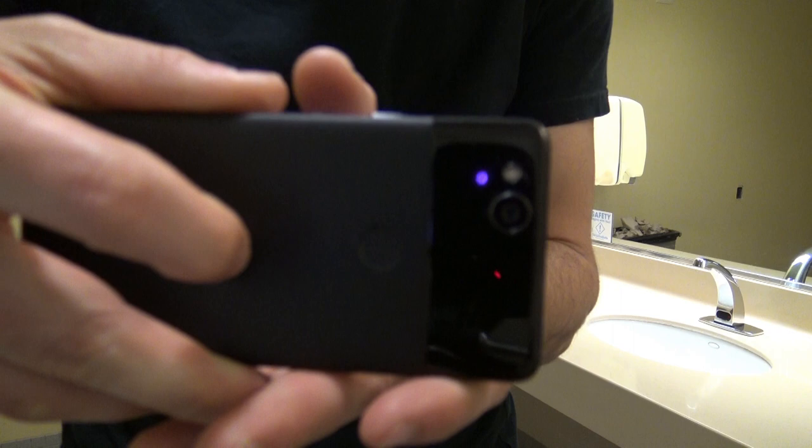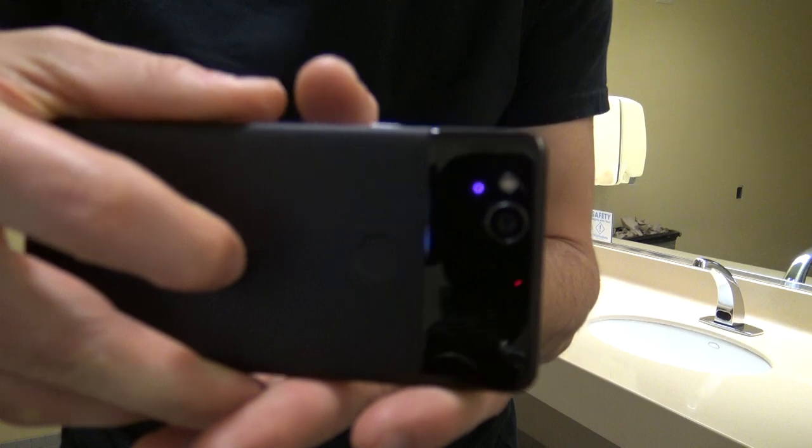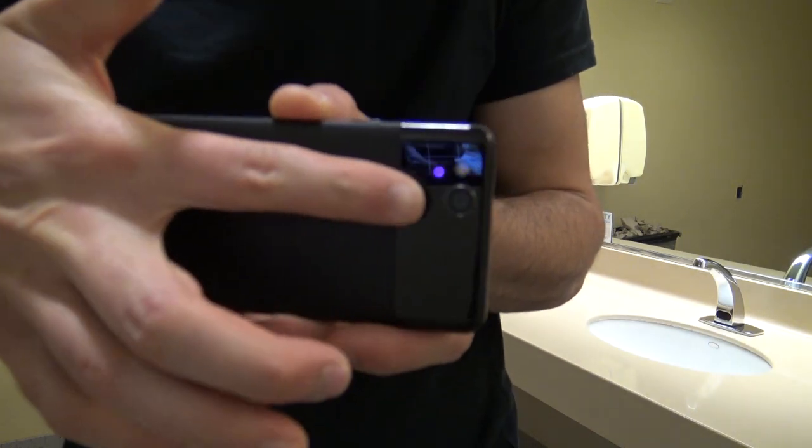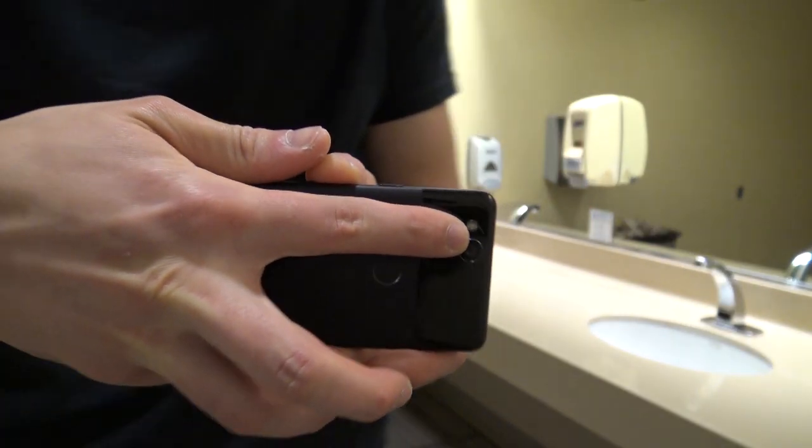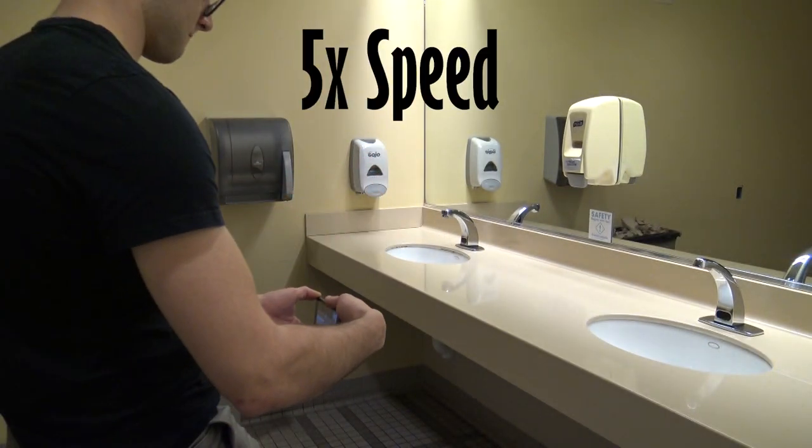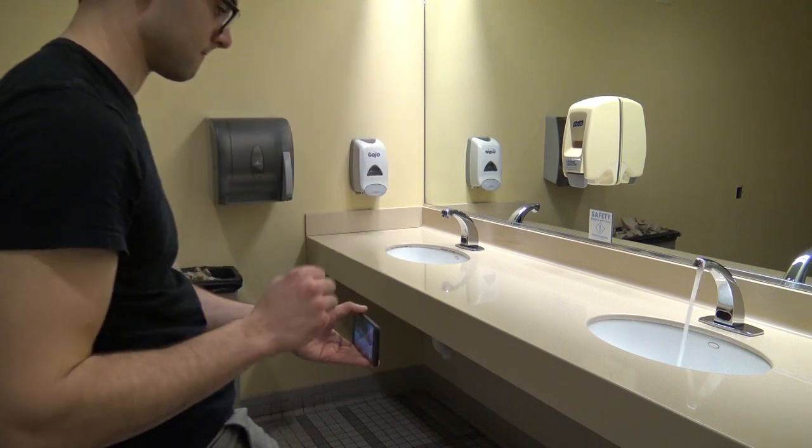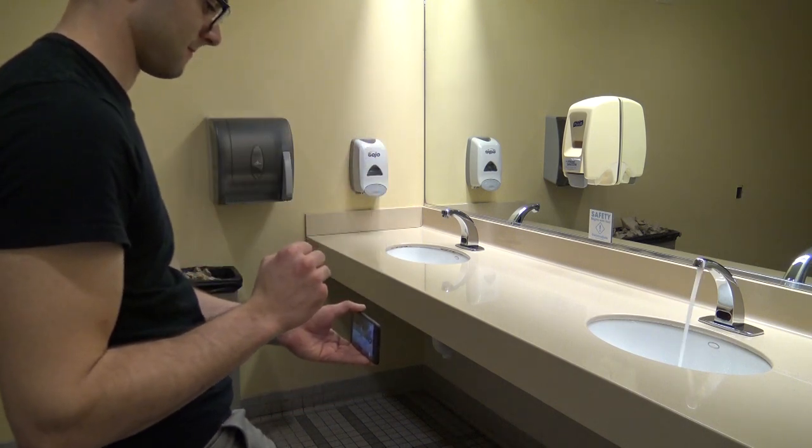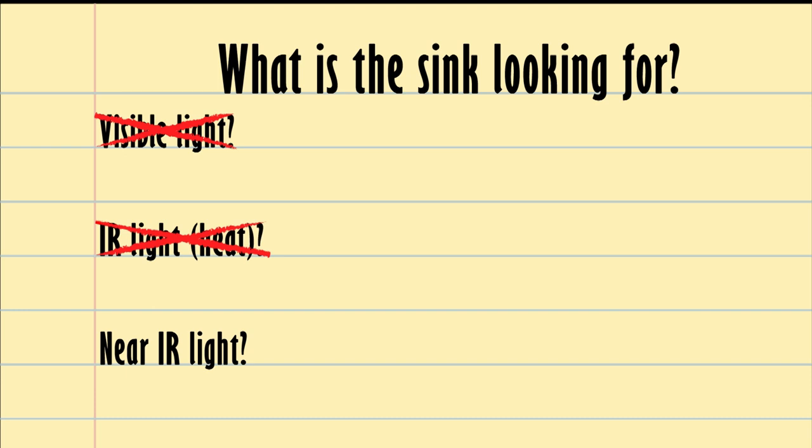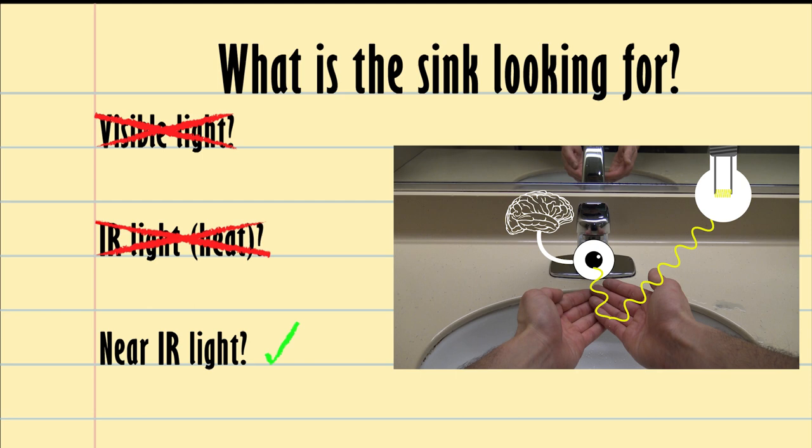To check if the sensor was looking for near infrared, I knew my cell phone camera used a near infrared laser for autofocus, which you can see as this purple dot. When I covered up the laser and pointed at the sensor for a while, the sink never came on. But as soon as I took my hand off the laser, the sink turned on right away. This meant that the sensor is definitely measuring near infrared light.